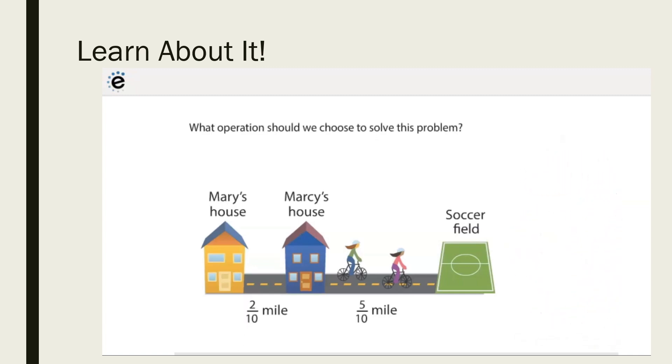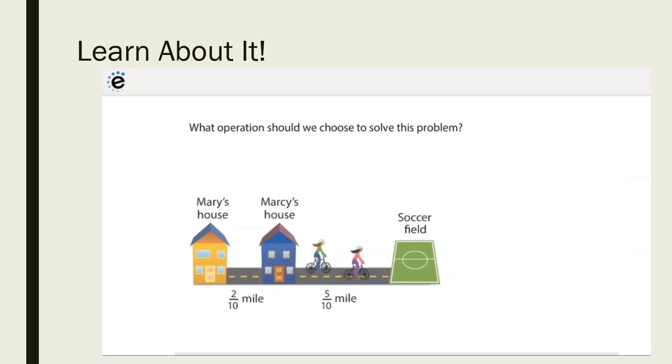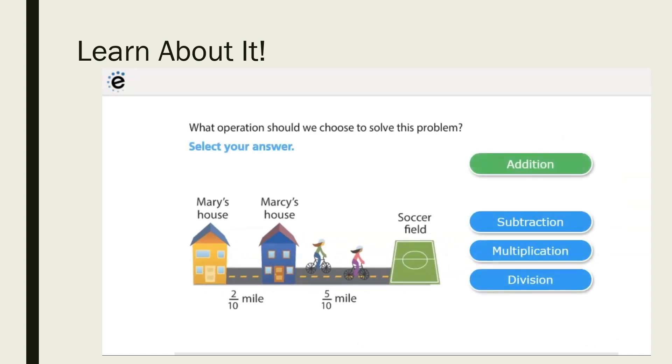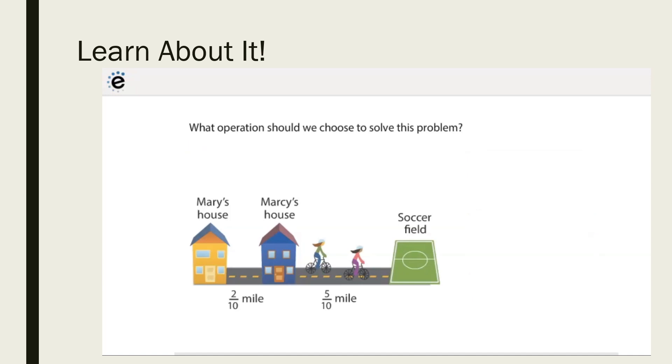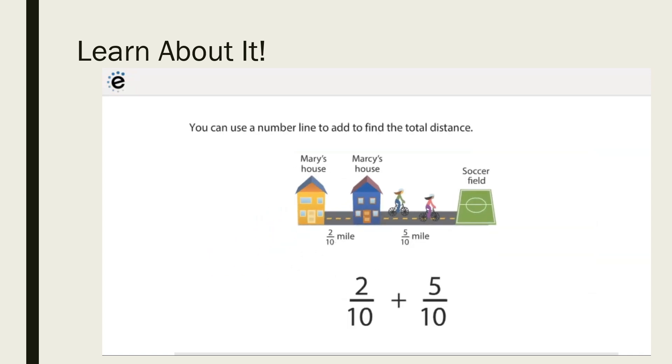What operation should you choose to solve this problem? Select your answer. You can use a number line to add to find the total distance. Use a number line to show addition. Draw a number line for tenths. Start at zero. Count two segments to the right to locate two-tenths on the number line. Then move five more segments to the right to show adding five-tenths.